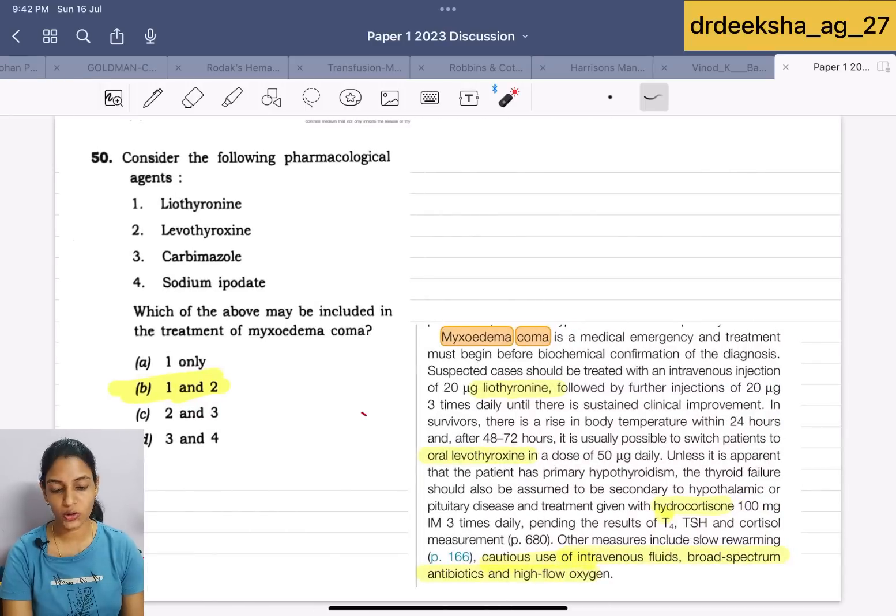Consider the following pharmacological agent which are used in the treatment of myxedema coma. In myxedema coma, liothyronine, oral levothyroxine, hydrocortisone and IV fluid antibiotics and oxygen are used. Only liothyronine and levothyroxine are used, no use of sodium ipodate and carbimazole.